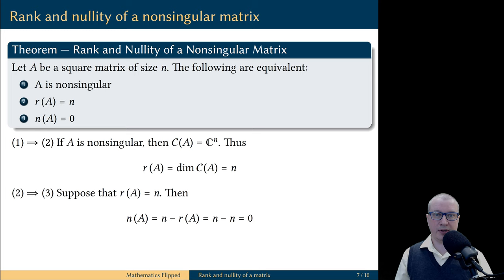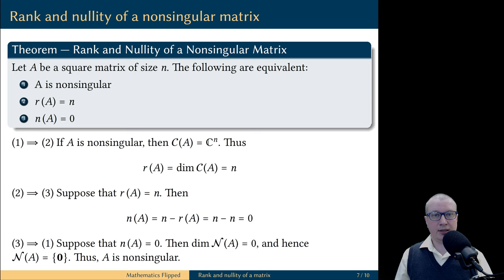To complete this cycle of equivalences, let's prove that statement 3 implies statement 1. We are going to assume that the nullity of A is equal to zero. This means that the dimension of the null space is equal to zero.